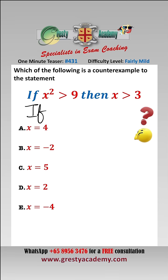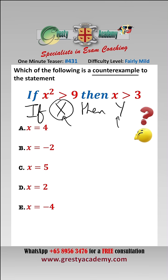This statement is of the form 'if x then y', which is a conditional statement where x is the hypothesis or antecedent, and y is the conclusion or consequent. To find a counterexample to this, we need x, the hypothesis, to be true and y, the conclusion, to be false. So let's have a look at each one of these in turn.